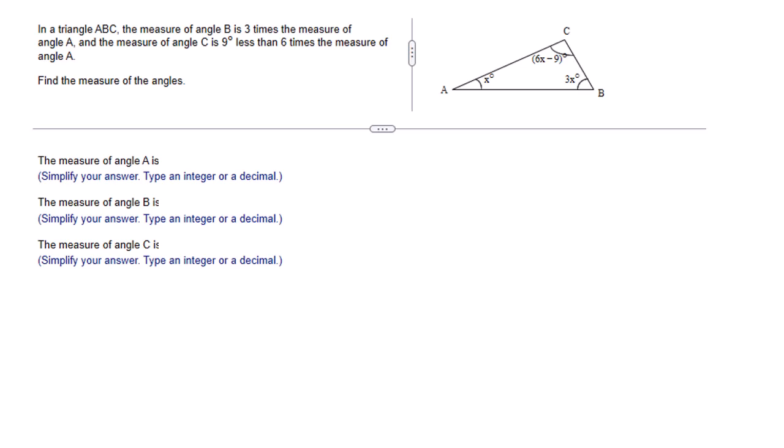In the triangle ABC, the measure of angle B is three times the measure of angle A. The measure of angle C is nine degrees less than six times the measure of angle A. Find the measure of the angles.